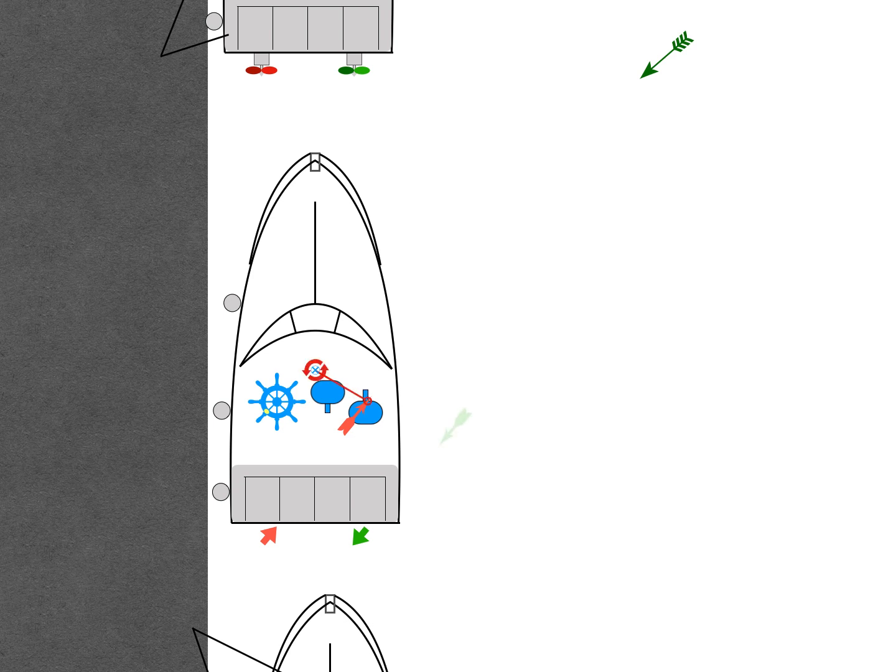The starboard engine thrust vector is also to starboard of the boat's centre of gravity but it's in the opposite direction so it creates turning moment to starboard, and because of the greater distance from the centre of gravity the turning moment is greater.